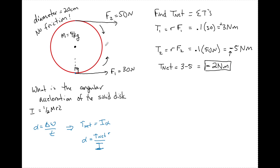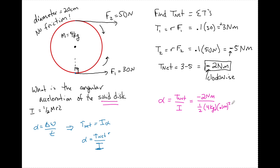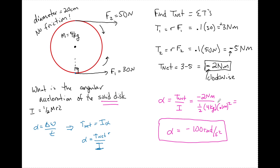So alpha equals net torque over I, which equals negative two Newton meters divided by one half times four kilograms times 0.1 meters squared. Therefore, alpha equals negative 100 radians per second squared. The negative sign means clockwise. If asked for the direction of angular acceleration, you'd use the right hand rule — wrap your fingers clockwise with your right hand — and the acceleration is into the page.